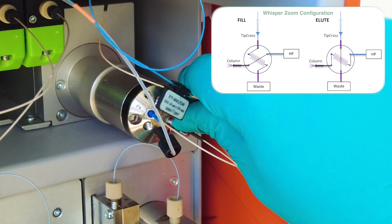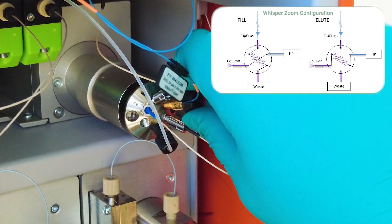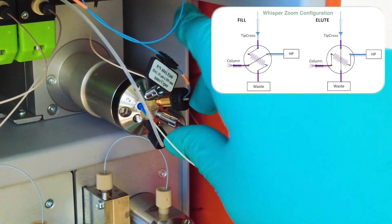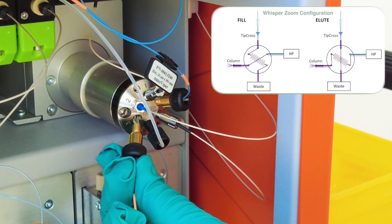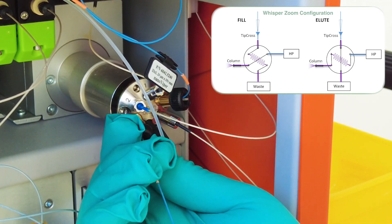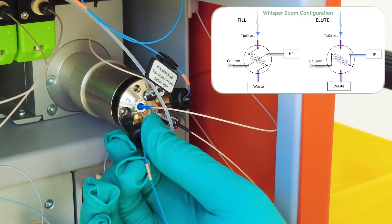Once again, this is all just finger-tight connections. We place that into port three, and this will still be connected to our column.